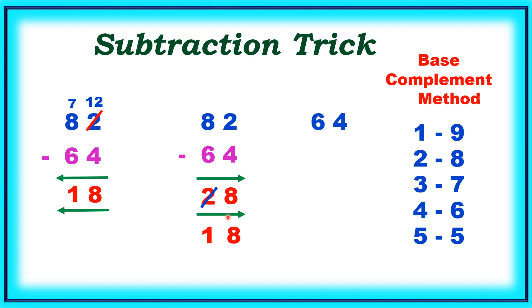We will try another example. 64 minus 36. From left to right. 6 minus 3 equals 3.